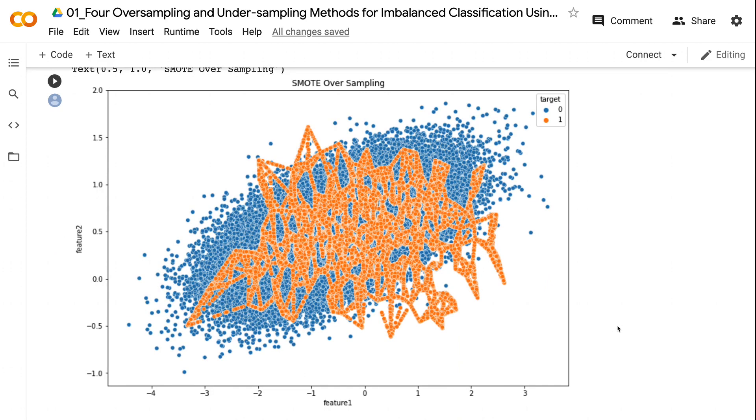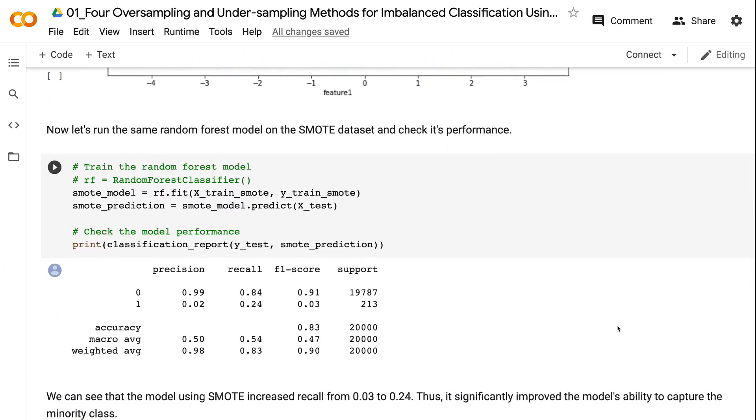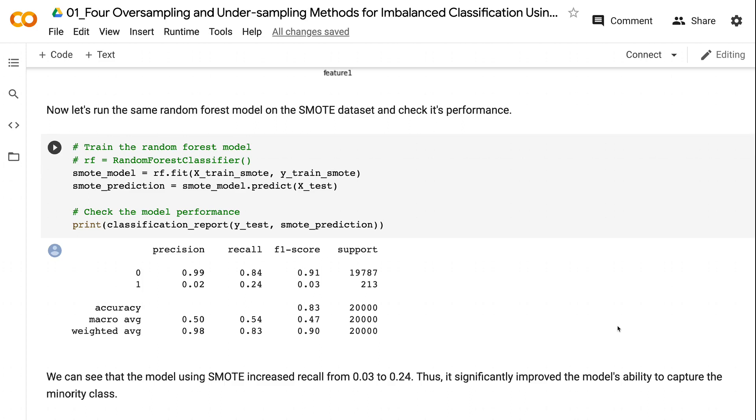Now let's run the same random forest model on the SMOTE dataset and check its performance. We can see that the model using SMOTE increased recall from 0.03 to 0.24. Thus, it significantly improved the model's ability to capture the minority class.